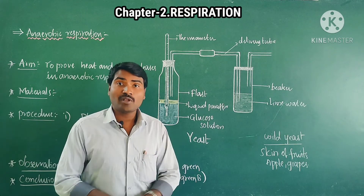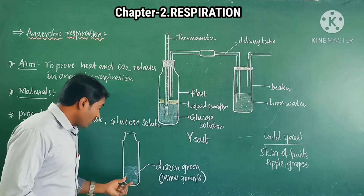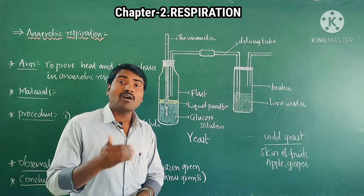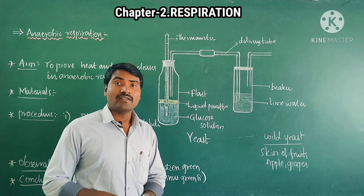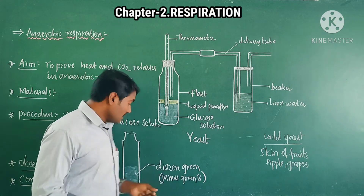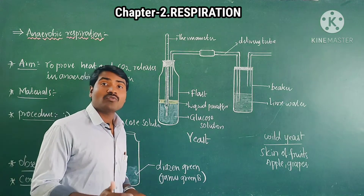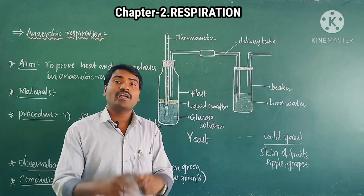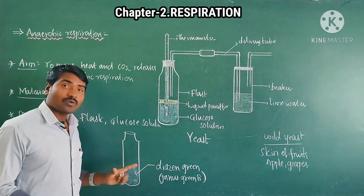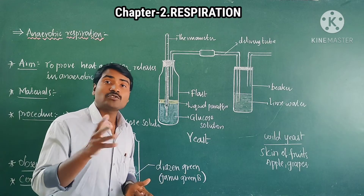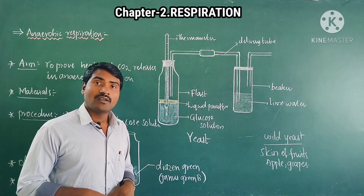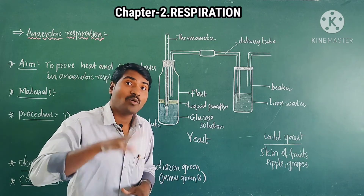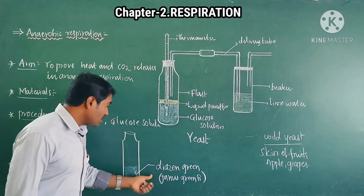How do we remove oxygen from the glucose solution? We have to slightly heat this flask for nearly one to two minutes. After heating, wait for the oxygen bubbles to disappear. If there is still doubt that oxygen remains in the glucose solution, we have to do a confirmation test.